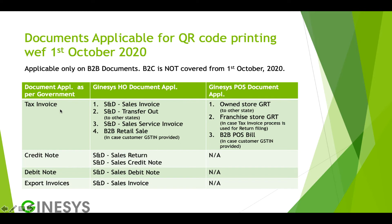Mapping the government's document types to Genesis: in HO, the S&D sales invoice transfer out — if we are transferring goods to other states — is treated as a tax invoice. Sale of service invoices and retail sale B2B invoices also apply if the customer provides their GSTN. In POS, if goods are being moved back to HO or any other out-of-state store, those own-store GRTs will be treated as tax invoices.